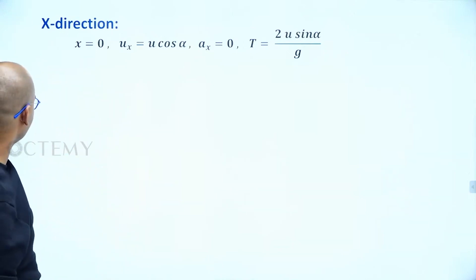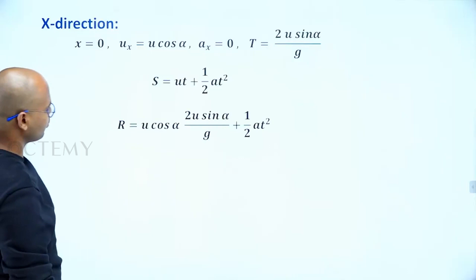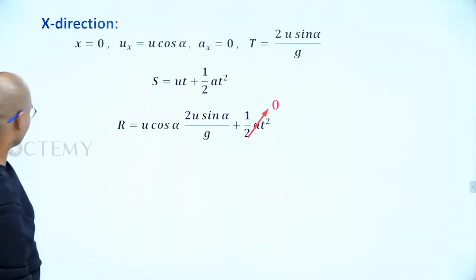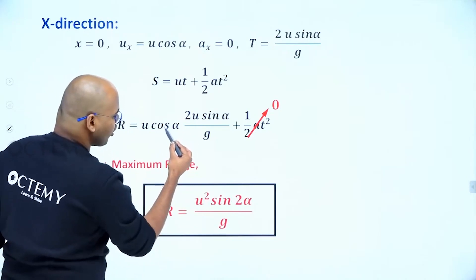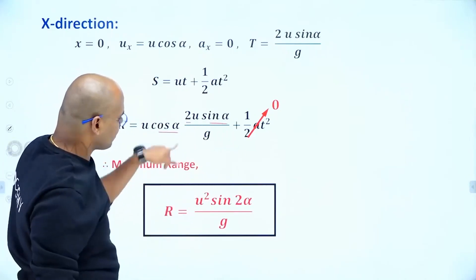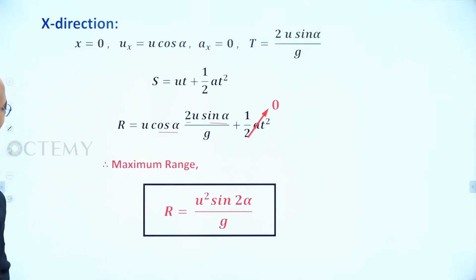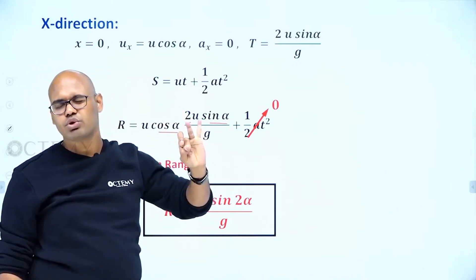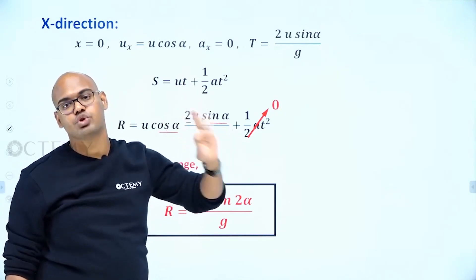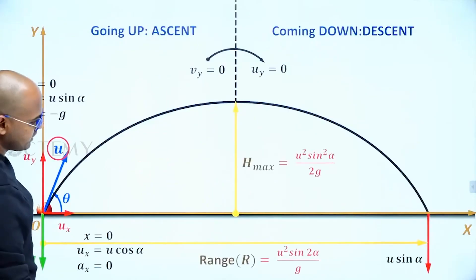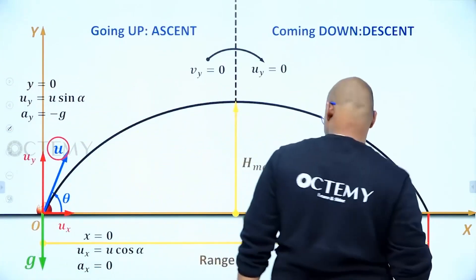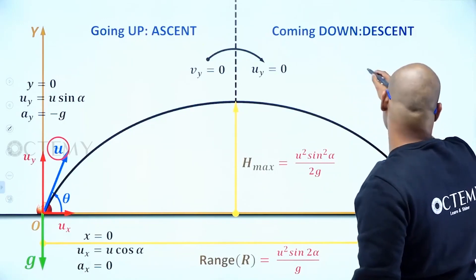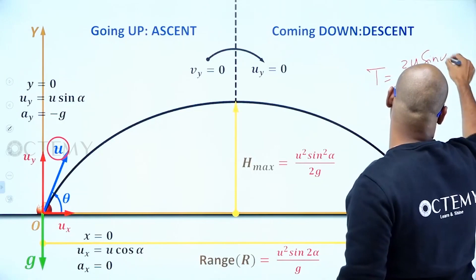Using s = ut + ½at² in x direction with acceleration = 0: Range R = u cos alpha × (2u sin alpha / g) = u² × 2 sin alpha cos alpha / g = u² sin 2alpha / g. So the range is u² sin 2alpha / g. Summary: maximum height h max = u² sin²alpha / 2g, total time of flight T = 2u sin alpha / g, and range R = u² sin 2alpha / g.